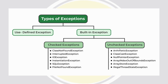There are two types of exceptions: checked exceptions and unchecked exceptions. Checked exceptions include ClassNotFoundException, IOException, and SQLException. Unchecked exceptions include ArithmeticException, NullPointerException, ClassCastException, and ArrayIndexOutOfBoundsException. Unchecked exceptions don't need to be handled at compile time — they occur only at runtime. Checked exceptions must be handled at compile time itself.